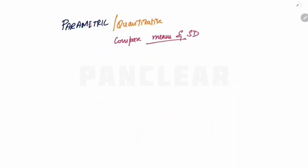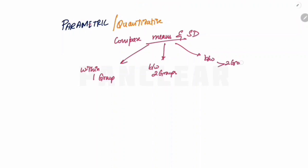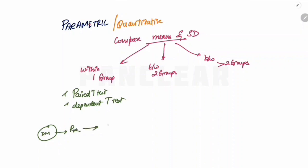So parametric tests, also called quantitative tests, compare means or standard deviations. We can compare within one group, between two groups, or between more than two groups. Within one group, we use the paired t-test, also called the dependent sample t-test, which means we are dependent on one particular group. For example, a group of diabetic patients — we look at pre-treatment and post-treatment FBS and PPBS values. Comparing these two values, we use the paired t-test.